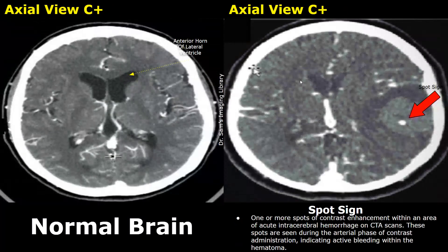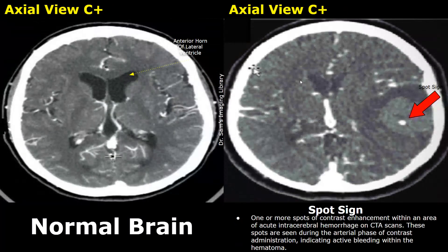This is another case showing the spot sign. These are contrast-enhanced images — we can see a hyperdense bright spot within the hemorrhage during the arterial phase. This is the spot sign.